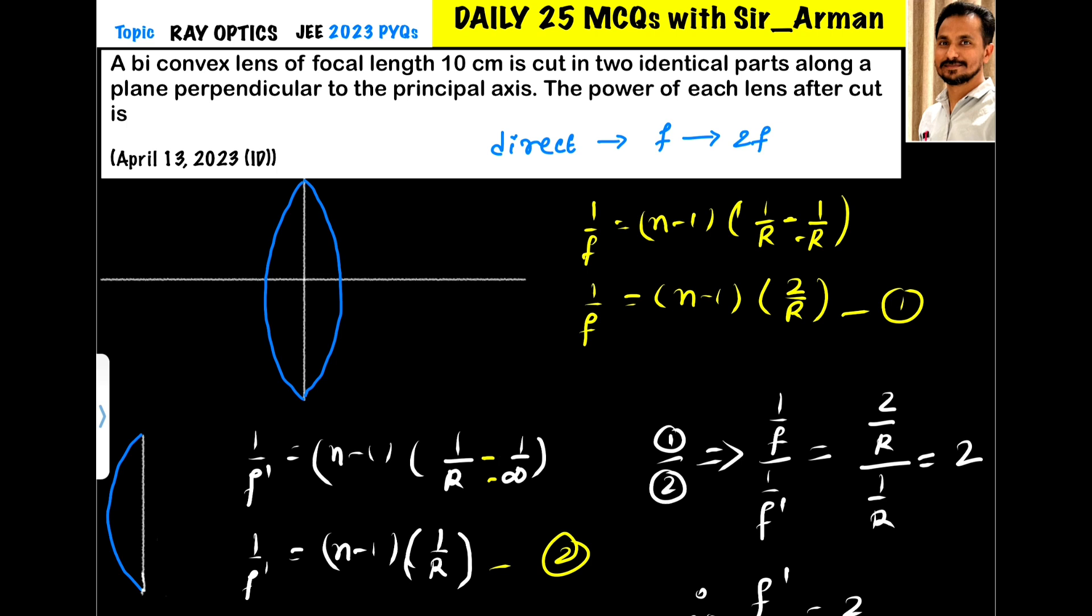So what is given here? A biconvex lens whose focal length is 10 centimeter is cut into two parts. So when we cut it, its new focal length f dash will be 20 centimeter, because it will half. That calculation I have shown here.